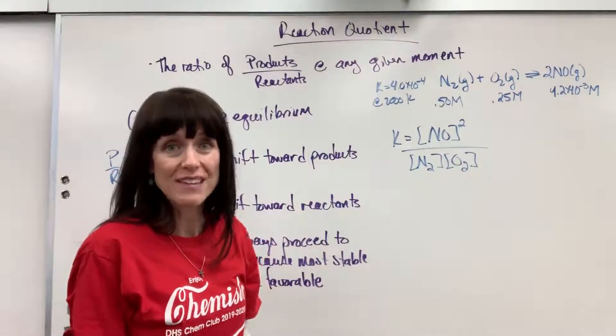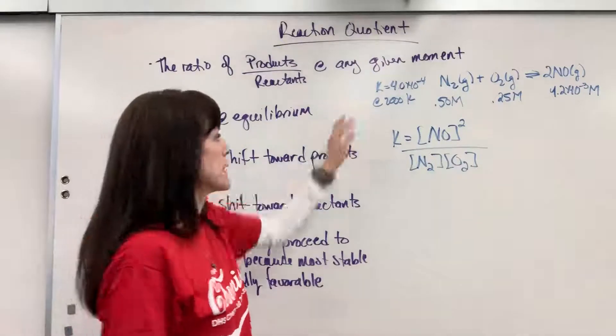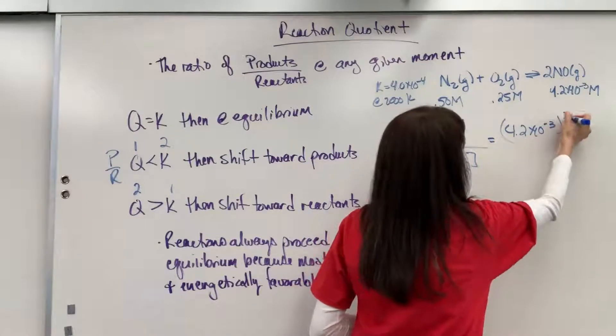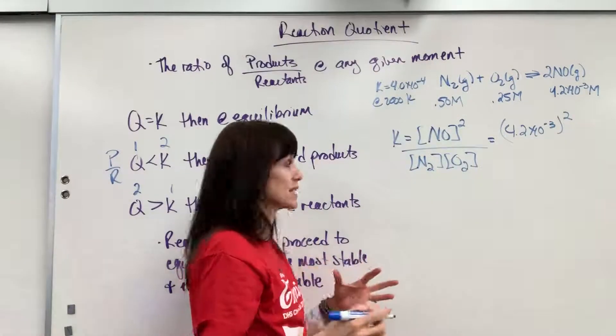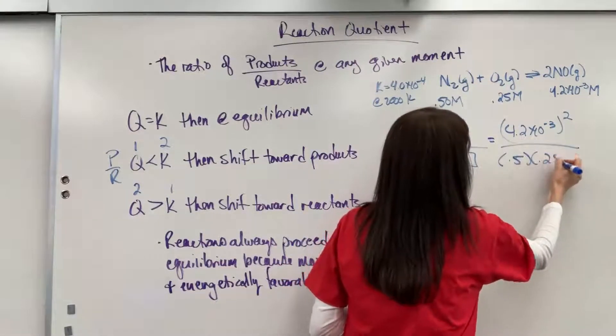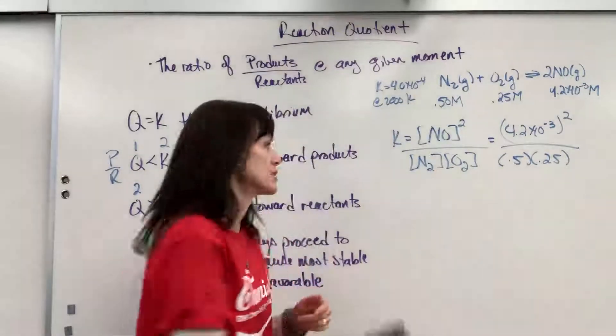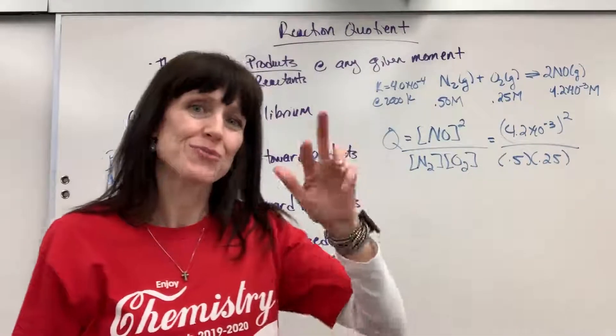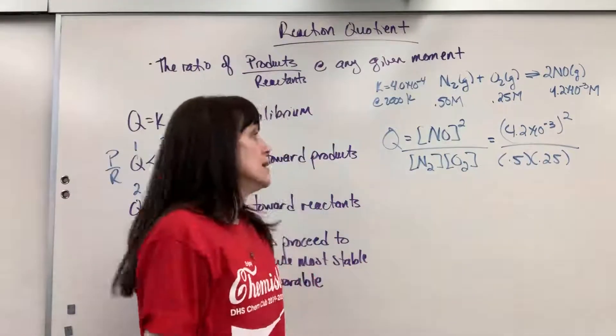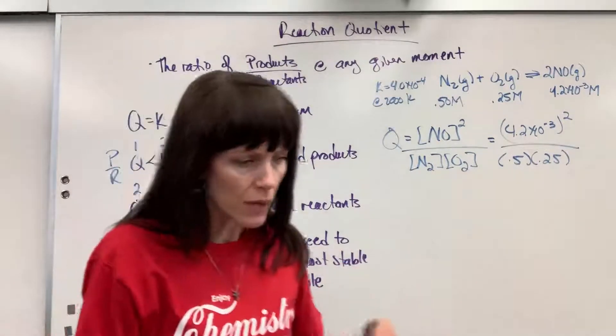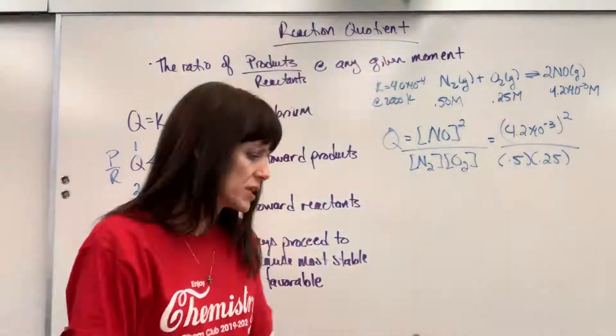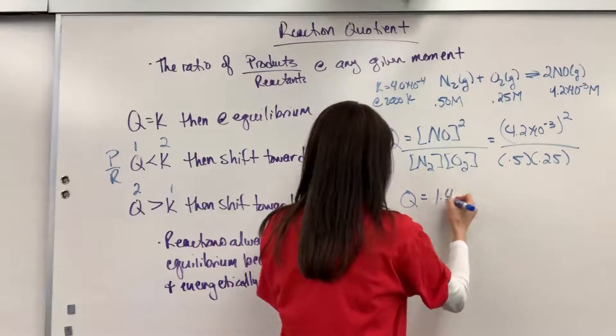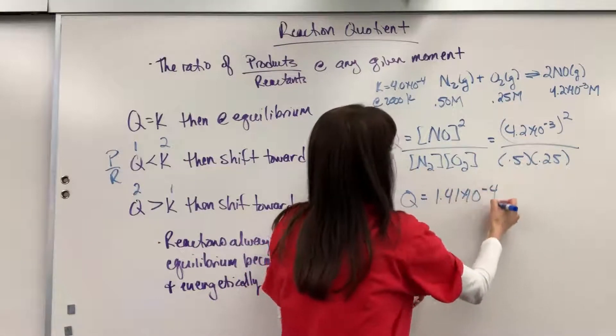Now, we just plug everything in and then compare it to the K. So let's put in our numbers. We're going to have 4.2 times 10 to the minus 3 squared. Be sure to carry that square. Treat it mathematically. Divided by 0.5 times 0.25. Do you know what? I apologize. We're trying to see where we're at. So this is Q. At this moment, what's the ratio between products and reactants? Because we don't know if we're at equilibrium. So we do this multiplication and division. And I get, at this moment, the ratio of products to reactants is 1.41 times 10 to the minus 4.